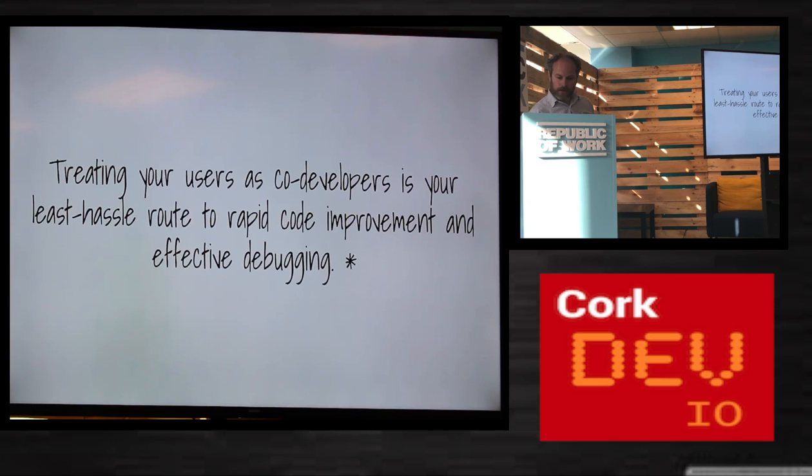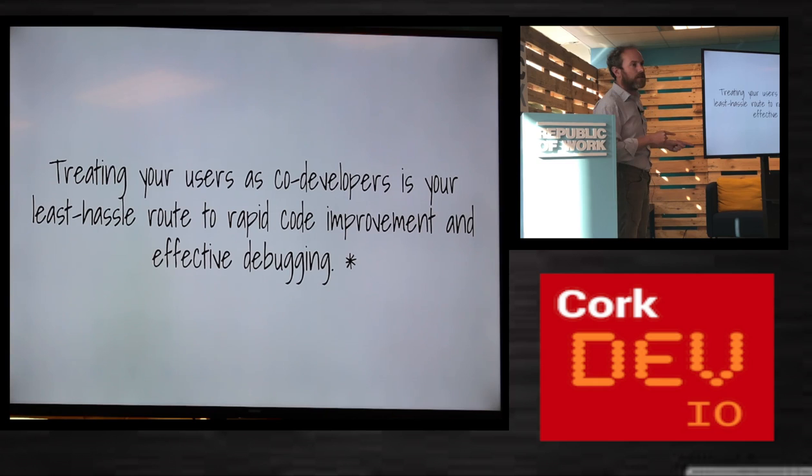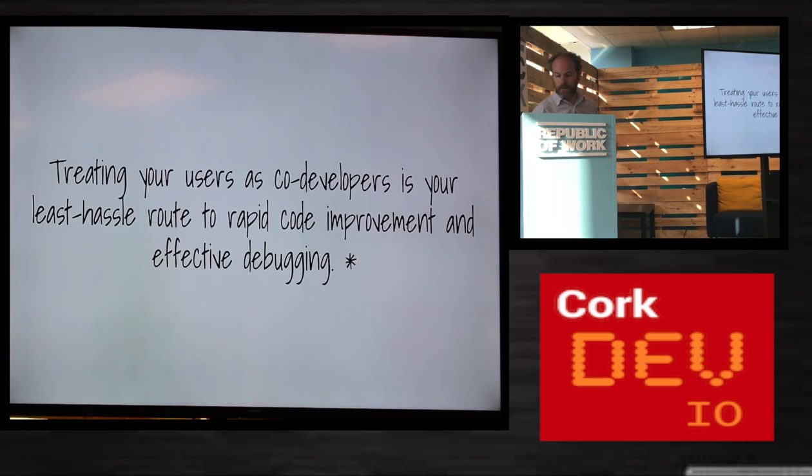Treating your users as co-developers is the least hassle route to rapid code improvement and effective debugging. This is really true - it's also true for the new methods that were added. GIMP is quite unique in that my users are literally code developers anyway. My target market are developers, so if people wanted a new feature they could either properly describe what they want or just hand over code. So that was one successful thing.